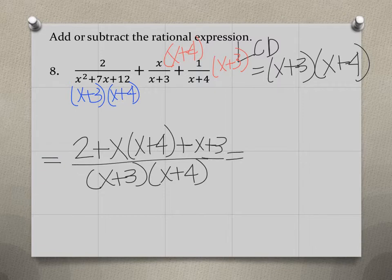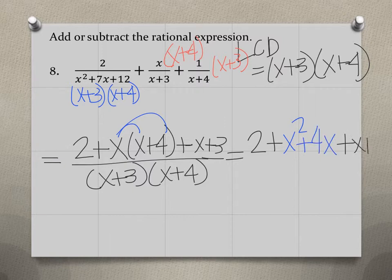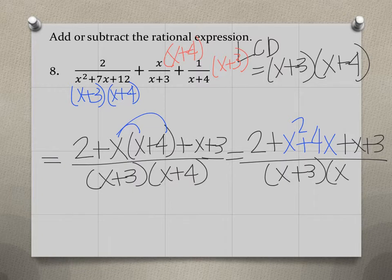So if I simplify, that's going to be 2 plus I can distribute my x value with x plus 4. So I have x squared plus 4x. And then I have x plus 3. And all that is divided by x plus 3 times x plus 4.